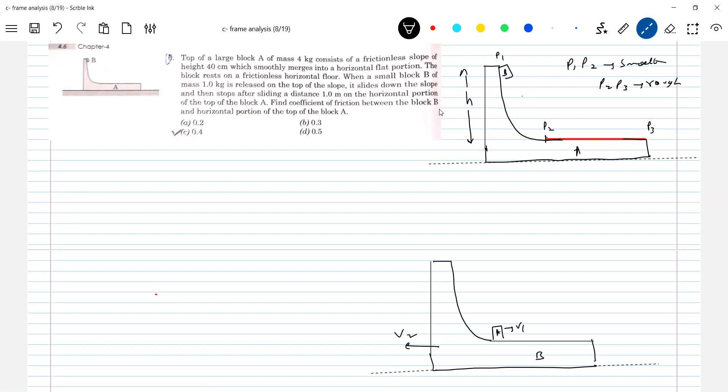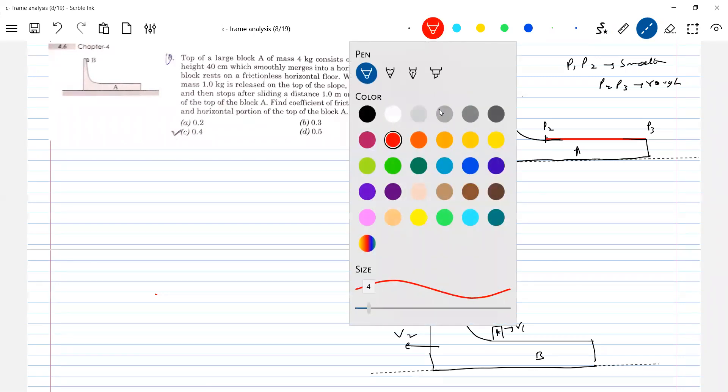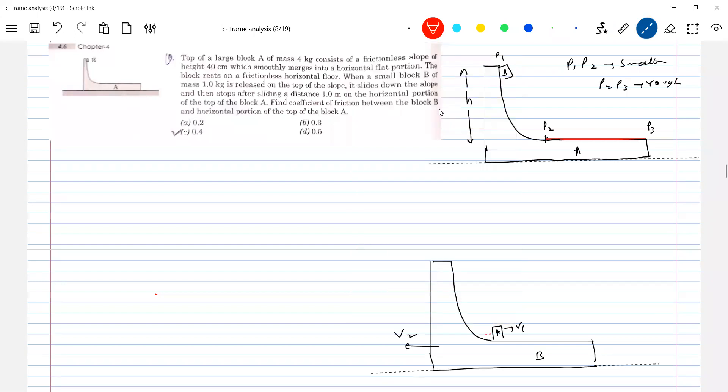So tell me very next moment what will happen. There will be friction acting. And how the friction will be acting? The friction will start acting towards left on the block. And on the wedge, it should be in this direction.